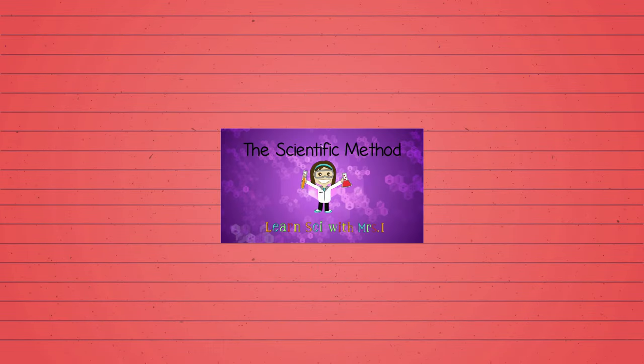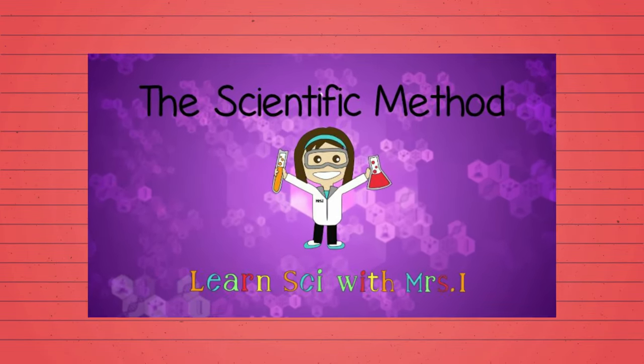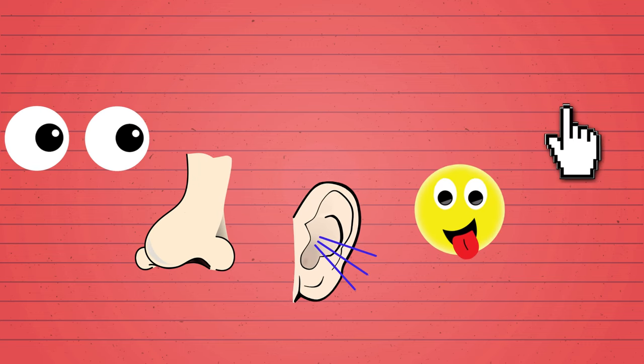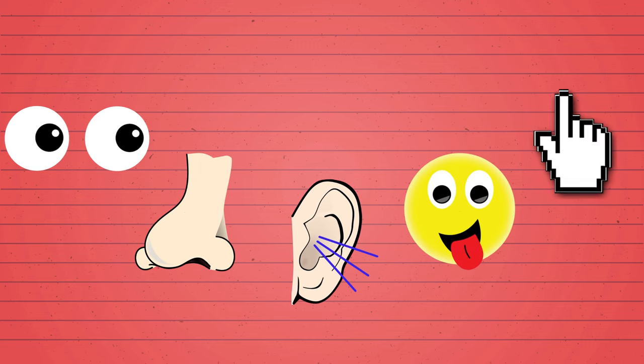If you watched my video on the scientific method, you will recall that our five senses are sight, smell, hearing, taste, and touch. To make sure we understand what an observation is, let's go through and discuss an example of each of those.